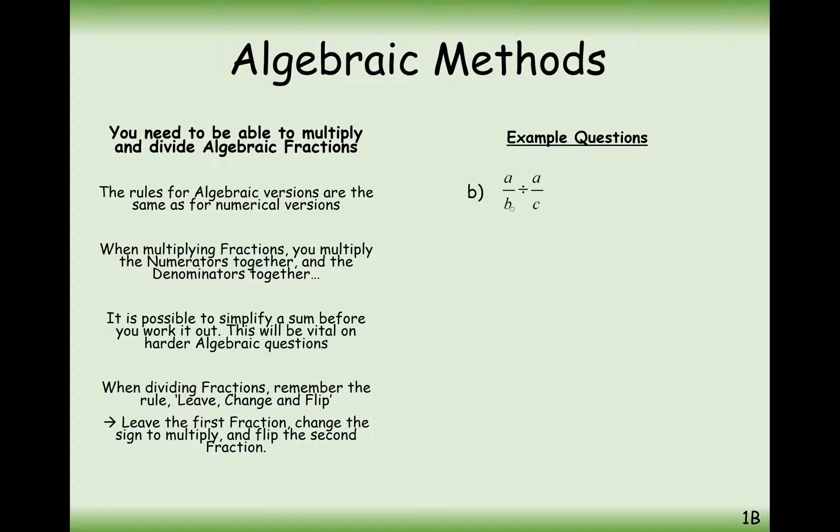So in this case here, if we've got a over b divided by a over c, then we flip the second fraction and multiply. So it's going to be c over b.